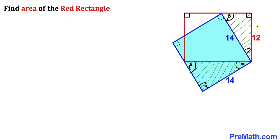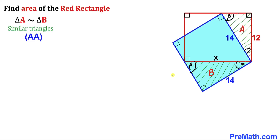Now let's focus on the red rectangle. One side length is 12 cm, and I'll call the other side length x cm. So the length of the red rectangle is x and the width is 12 cm. I'll label the left right triangle as A and the right triangle as B. We can conclude that triangle A and triangle B are similar triangles by the Angle-Angle (AA) theorem.